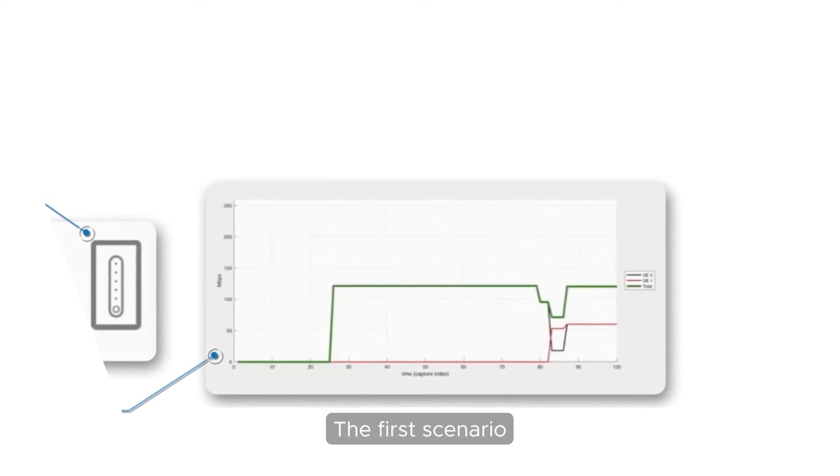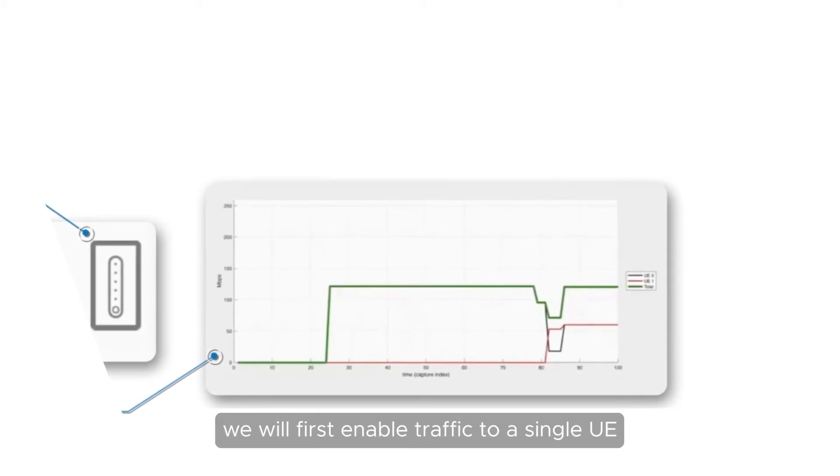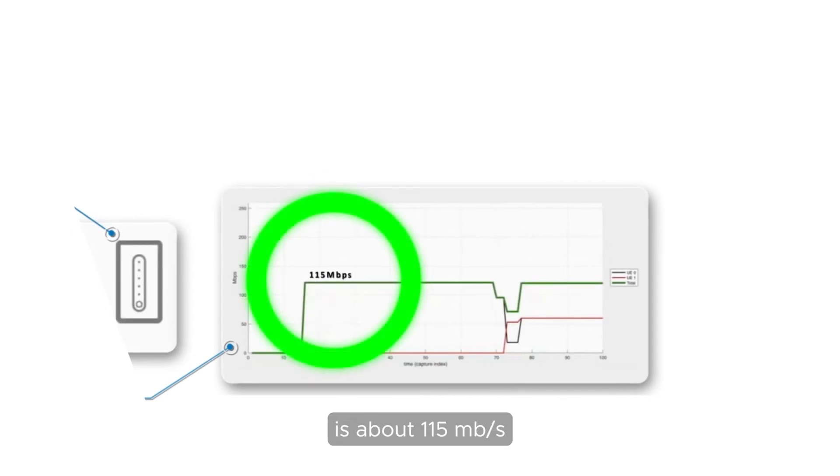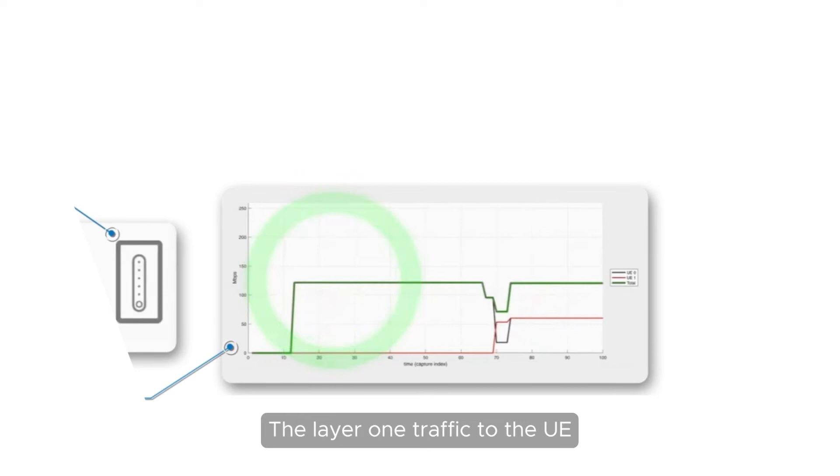For the first scenario, we will first enable traffic to a single UE so that it receives two layers in single-user MIMO. The layer 2 traffic measured by the UE is about 115 Mbps. The layer 1 traffic to the UE is 128 Mbps, which is also the aggregate cell throughput.